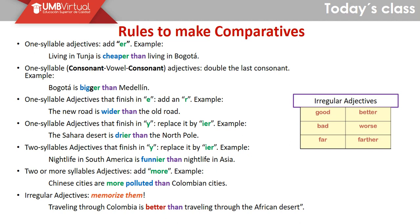Next, one-syllable adjectives that finish in -y: replace the -y with -ier. Example: the Sahara Desert is drier than the North Pole. Next rule, two-syllable adjectives that finish in -y, again replace the -y with -ier. Example: nightlife in South America is funnier than nightlife in Asia. And next, we have two or more syllable adjectives; in that case we just add the word 'more'. Example: Chinese cities are more polluted than Colombian cities.